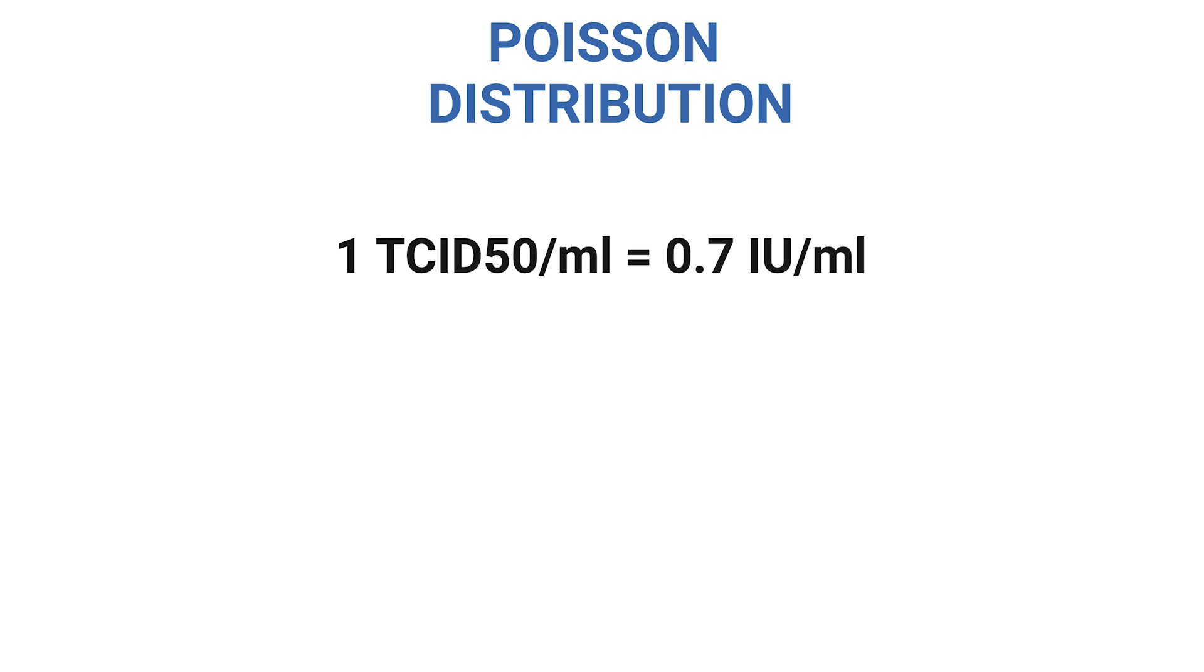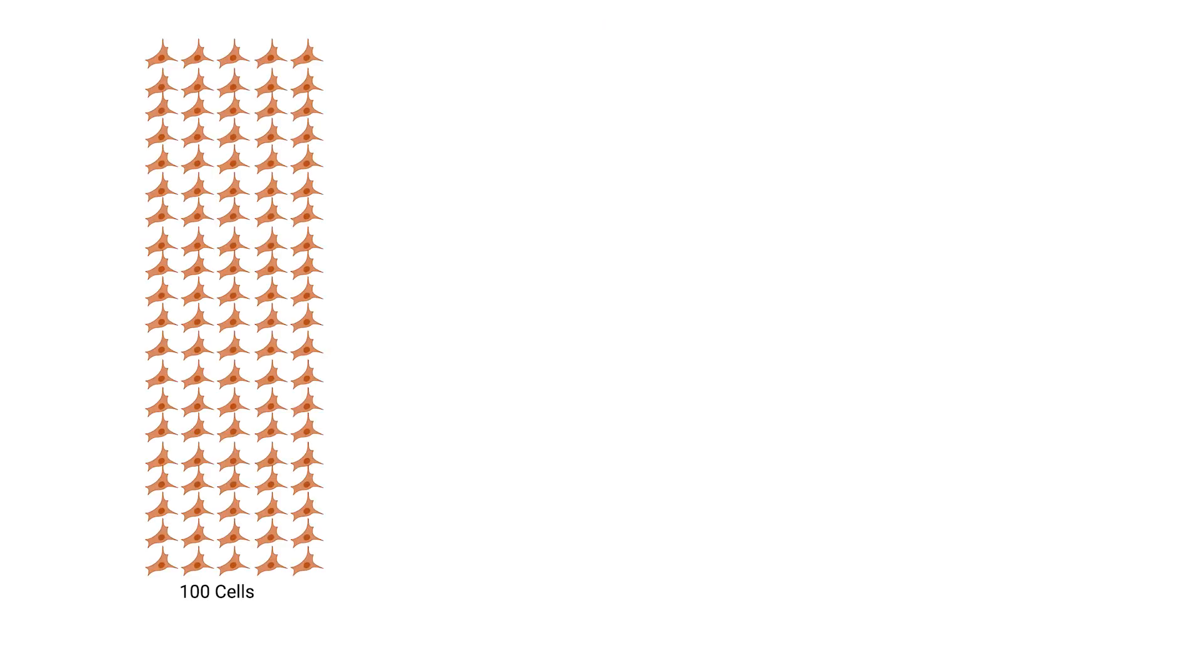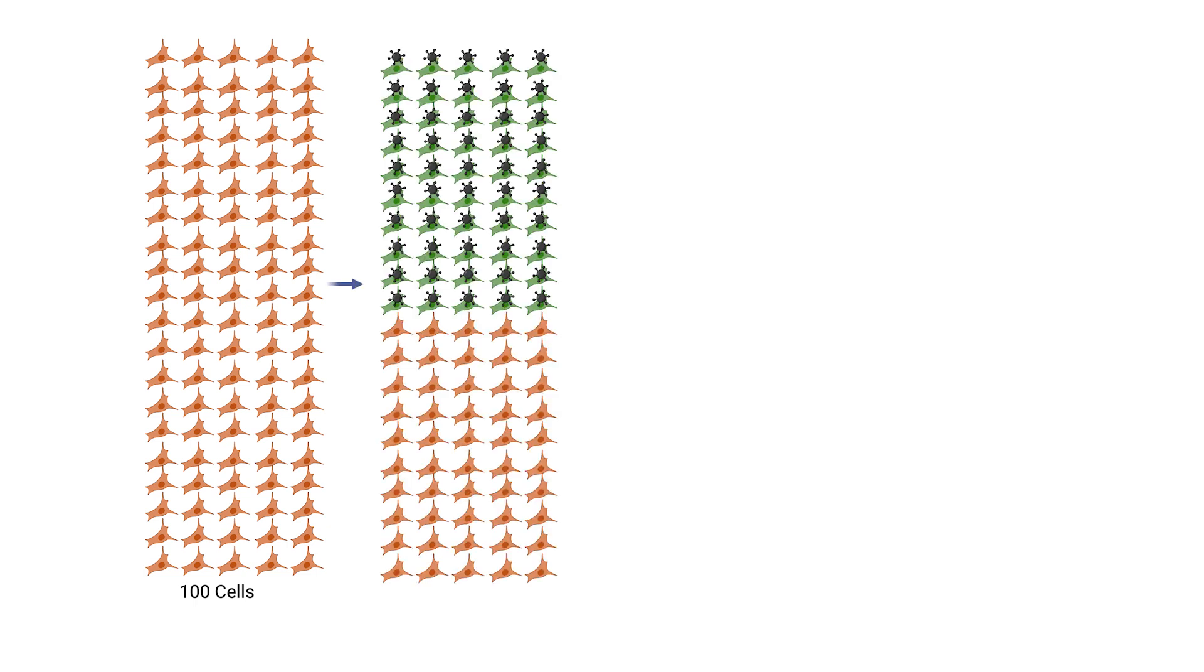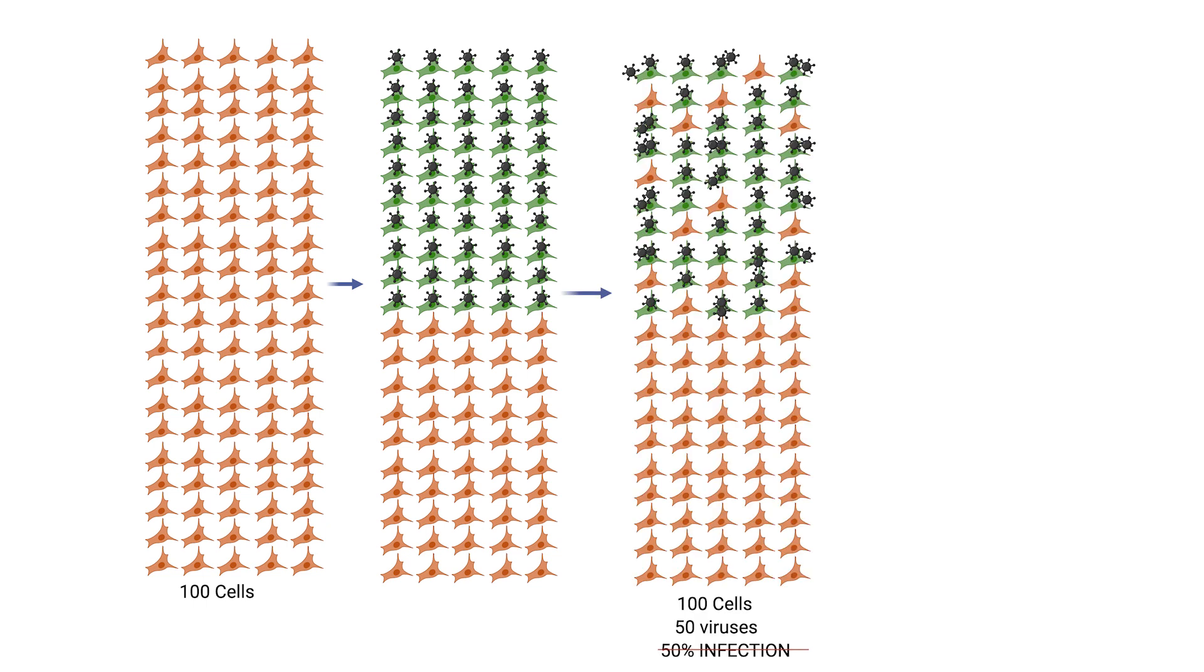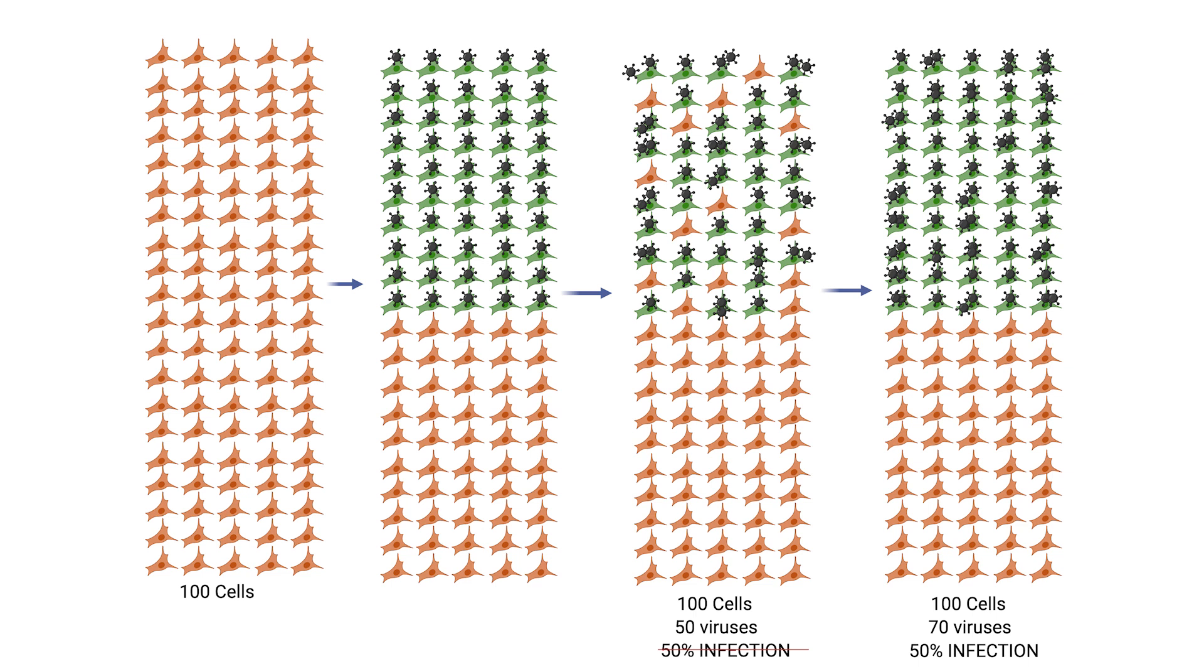This is a little unintuitive, but we can explain with the help of a very simple example. Suppose we have 100 cells. We might have expected 50 viruses to be enough to achieve a 50% infection rate, but when our equation accounts for the fact that some cells will be infected by more than one virus, this means that some other cells will be missing out, and we need more virus to reach the 50% infection rate. In this simple example, 70 viruses are needed to infect 50% of our 100 cells.